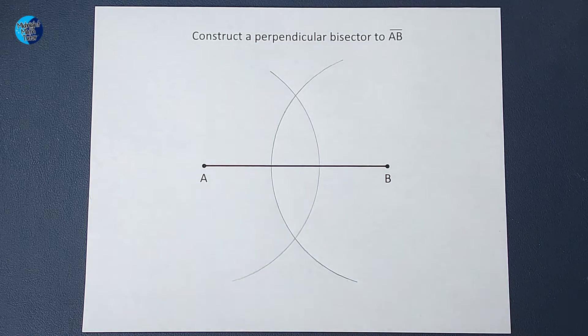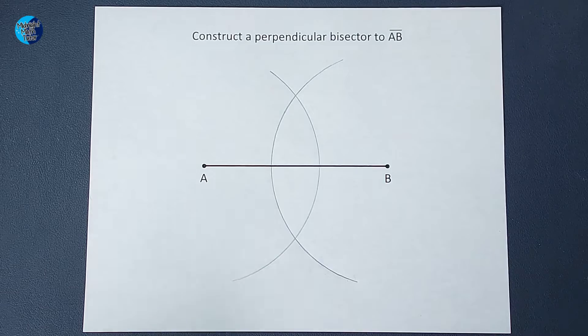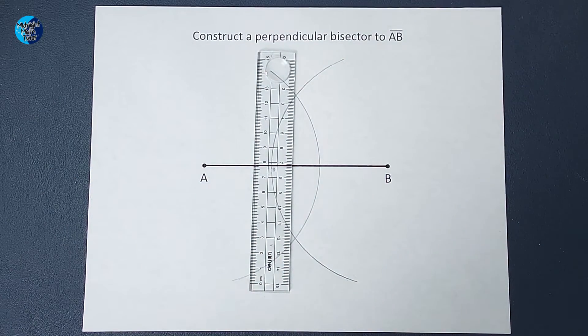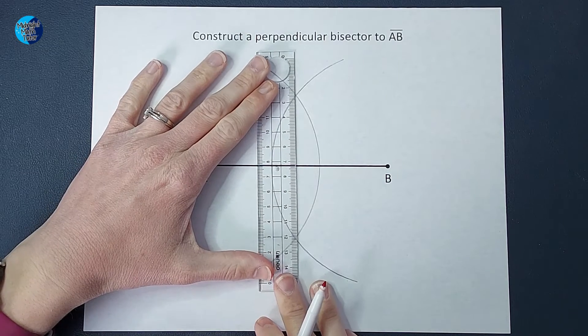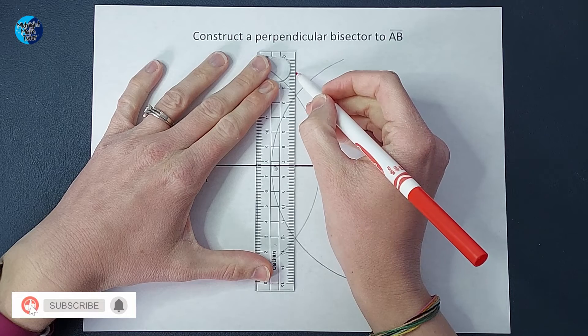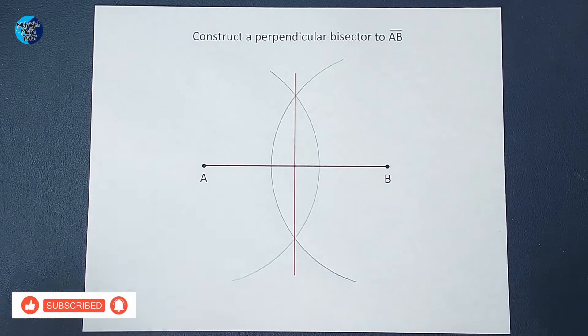Now you probably guessed what we're going to do next. We are going to connect these two intersection points. So here is my ruler. Lining it up. And we are going to make our line here. And look at that.